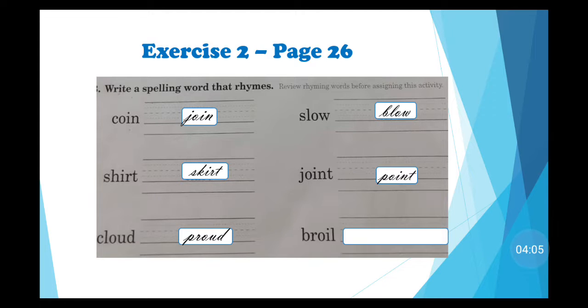Joint. Point. Broil. You can use two words of the list. Oil and boil. You have two options in this part. Okay. Thank you for your attention. This one is the class of spelling. Thank you very much. God bless you.